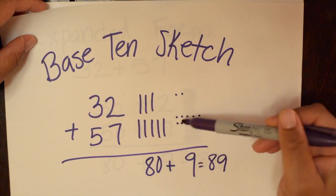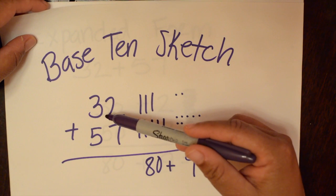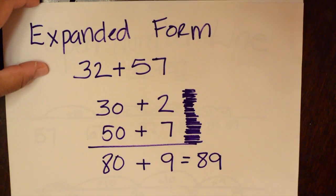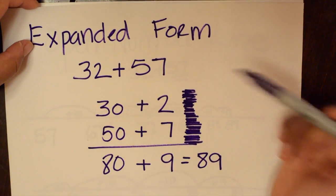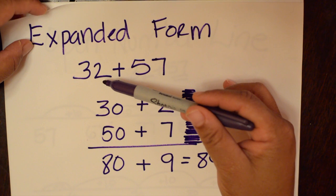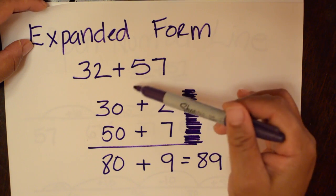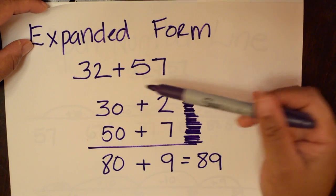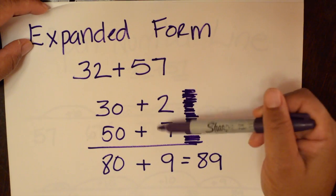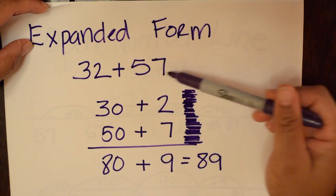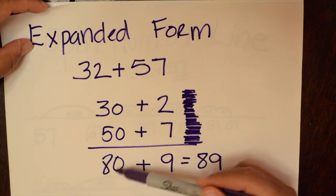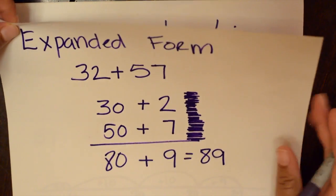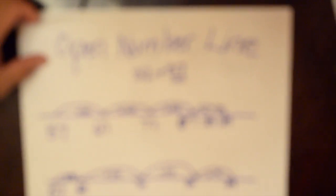Okay, the next one I want to talk about is expanded form. So here we have the children working, and they are actually expanding out. So we have 30 plus 2 from 32 and 50 plus 7 from 57, and then we add 80 plus 9, and we get 89. So that's the expanded form, another way your children should know how to do it.